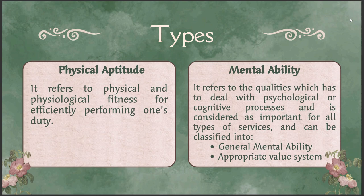The third type is appropriate value system — it is nothing but the combination of desired values like empathy, objectivity, and impartiality. For civil servants and civil services as a whole, this component of aptitude is very important for performing one's job not only efficiently but also effectively.